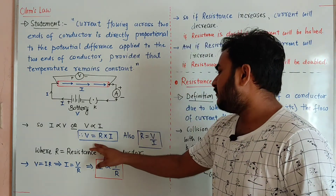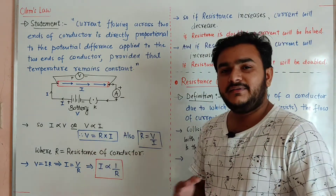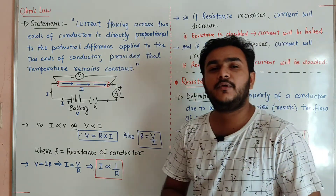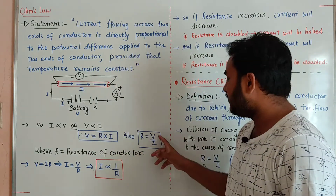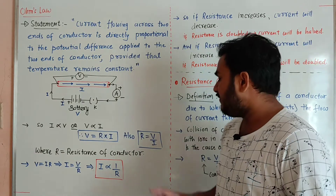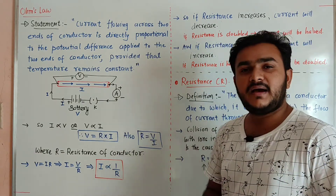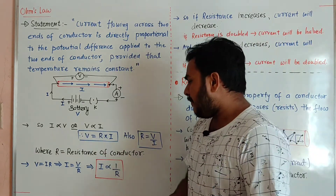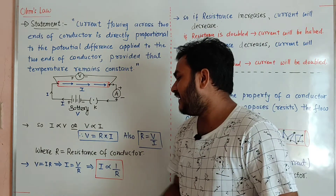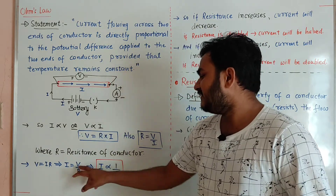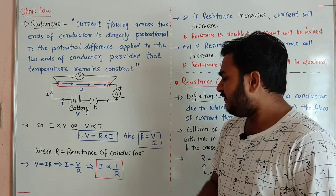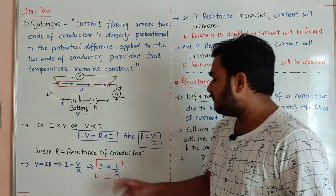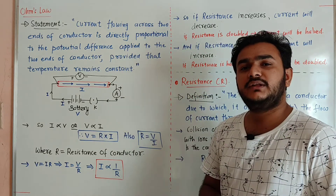From this equation, we can make another equation: resistance is equal to V upon I, that means the potential difference across the conductor divided by the current passing through the conductor. Apart from this equation, we can also say that I is equal to V upon R, which tells us that the value of current is inversely proportional to the resistance.